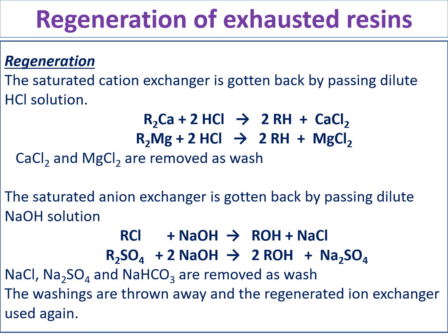When the cation and anion exchange resins are exhausted, they are unable to continue the softening process and need to be regenerated. To regenerate the cation exchange resin, HCl is passed over it, which restores the H⁺ ions. For the anion exchange resin, NaOH (sodium hydroxide) is passed over it, which restores the OH⁻ ions and regenerates ROH. The waste water containing salts from regeneration is drained outside.